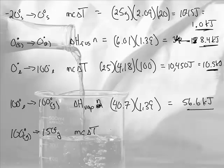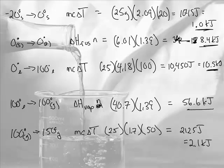And then 100 to 150 with the MC delta T, this would be 25. Now this is steam, and steam has a different specific heat, so we're looking this up on a table. It's 1.7, and the change in temperature is 50 degrees. 2,125 joules, which is 2.1 kilojoules.